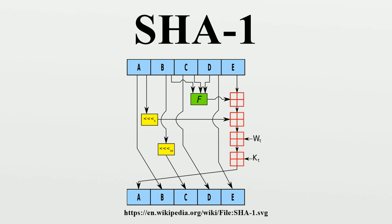On 8 October 2015, Mark Stevens, Pierre Karpman, and Thomas Peyrin published a free-start collision attack on SHA-1's compression function that requires only 2^57 SHA-1 evaluations. This does not directly translate into a collision on the full SHA-1 hash function, but undermines the security claims for SHA-1. In particular, it is the first time that an attack on full SHA-1 has been demonstrated. All earlier attacks were too expensive for their authors to carry them out. The authors named this significant breakthrough in the cryptanalysis of SHA-1 the SHAttered attack. The method was based on their earlier work, as well as the auxiliary paths speed-up technique, using high-performance, cost-efficient GPU cards from NVIDIA.